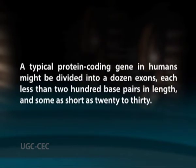A typical protein coding gene in humans might be divided into a dozen exons, each less than 200 base pairs in length and some as short as 20 to 30. It is therefore much more difficult to detect periodicities and other known content properties of protein coding DNA in eukaryotes. Advanced gene finders for both prokaryotic and eukaryotic genomes typically use complex probabilistic models such as the hidden Markov model to combine information from a variety of different signal and content measurements.